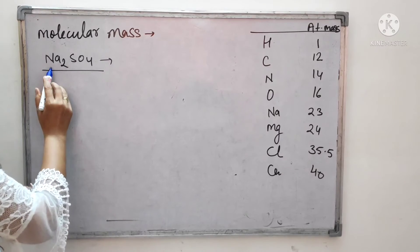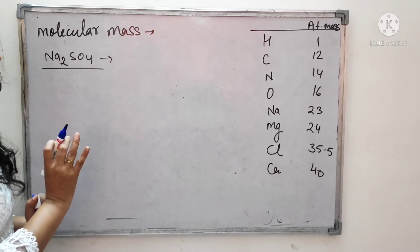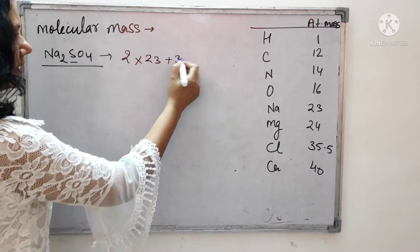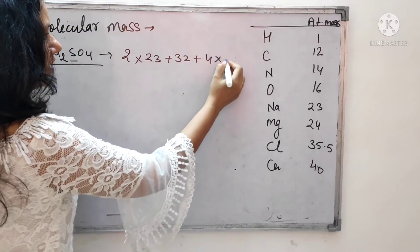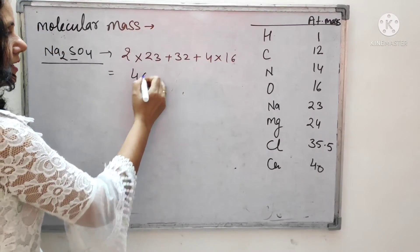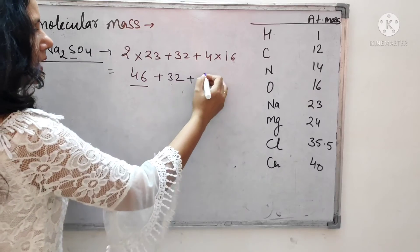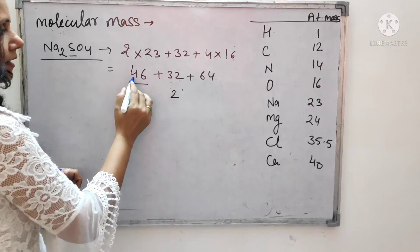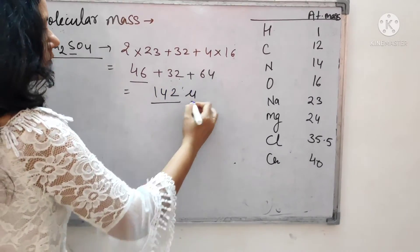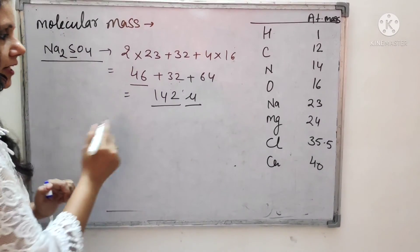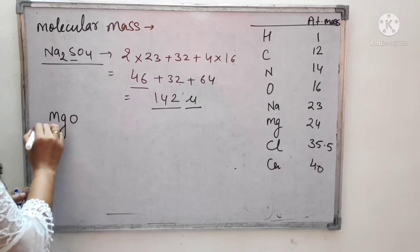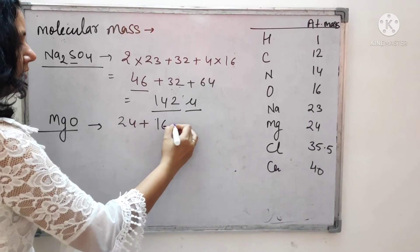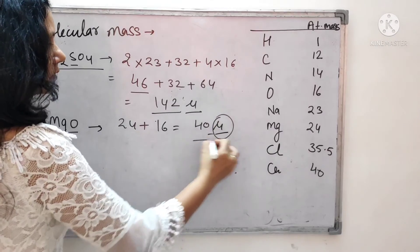Now a bigger molecule: Na2SO4 (sodium sulfate). It has 2 sodium (each 23), 1 sulfur (32), and 4 oxygen (each 16). So: 2×23 + 32 + 4×16 = 46 + 32 + 64 = 142 u. Another example: MgO — magnesium is 40 plus oxygen is 16, giving a molecular mass of 56 u. Remember to always write the unit.